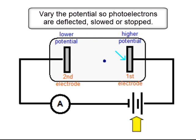The potential of the second electrode can be varied to accelerate, deflect, or to stop the photoelectrons.